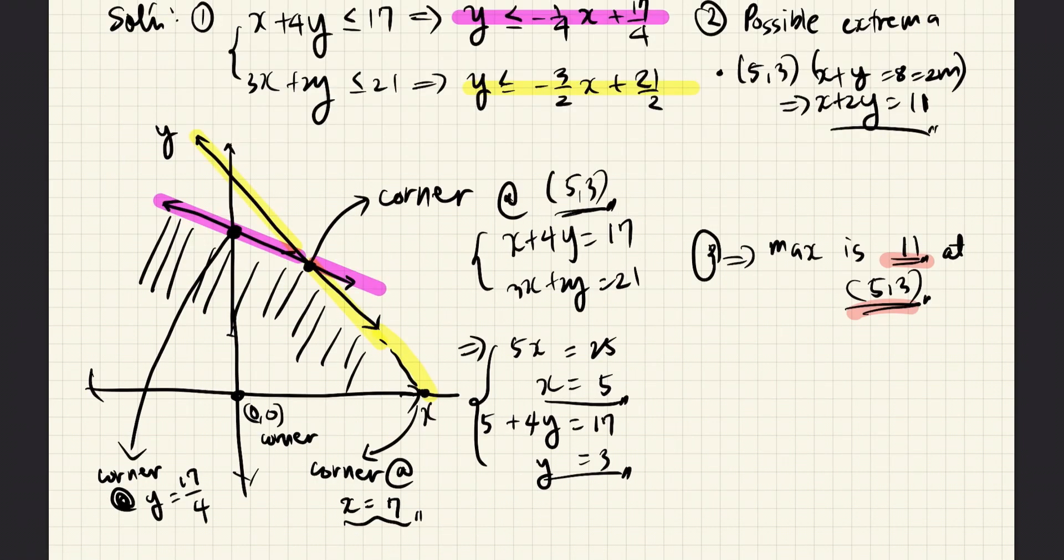To sketch the given inequalities, we rewrite the given inequalities in the slope-intercept form. This line is decreasing from left to right, and it has a Y-intercept of 17 over 4 in here. And because this is a less than or equal to symbol, this inequality refers to the area below the pink line.